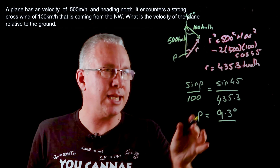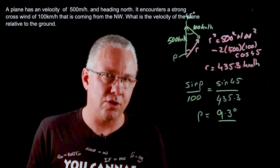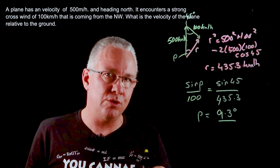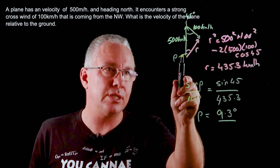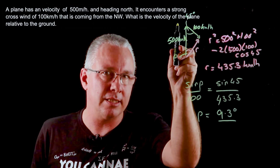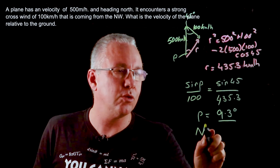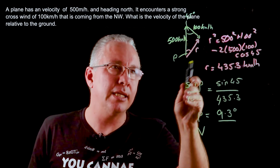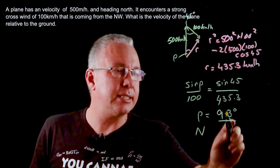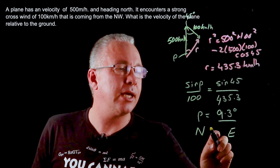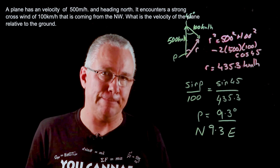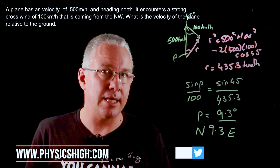We haven't finished yet — that's the angle. Now we just need to describe the direction. If the angle is measured from a vertical or from a horizontal, you start with that one. So we start in the north and we're heading towards the east, and therefore the direction is 9.3 degrees towards the east.